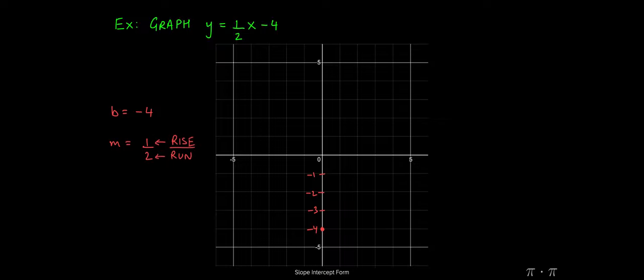So if we start at the y-intercept and we rise by one unit and run by two units, we get our second point on the line. And if we connect the two dots, we have the graph of our line: y equals one half x minus 4. And that's it.